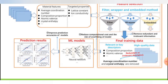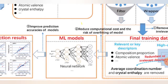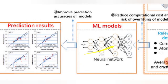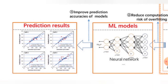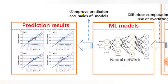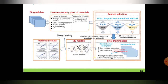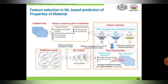After applying the three techniques, the output is the relevant or key descriptors — high-quality data — which is then forwarded to machine learning models such as neural networks. The neural networks identify and produce results in various forms. This is how feature selection for machine learning-based prediction of properties of materials works.